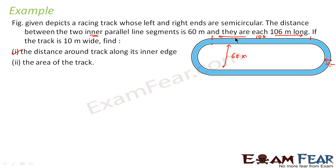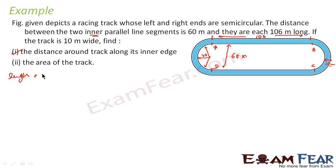Let's find the first one — distance around the track along the inner edge. This straight section is 106 meters, and this one is also 106 meters. Since the whole inner width is 60 meters and the ends are semicircles, the radius is 30. The inner track length will be AB plus BC plus CD plus DA.